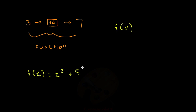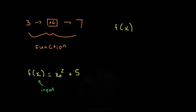Let's look at this function: f(x) is equal to x squared plus 5. What this function does is it takes an input — this x — and puts it inside the function, specifically wherever you see the same letter. So in this case, wherever you see an x. The function then squares the x, or the input, and then adds a 5 onto it.